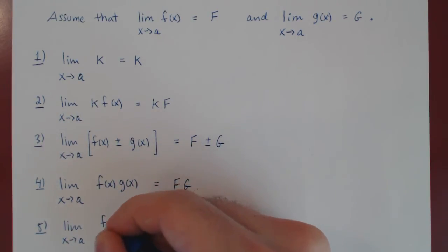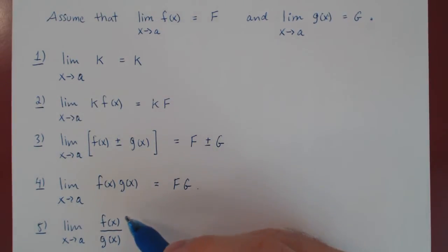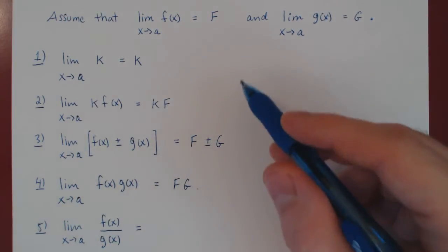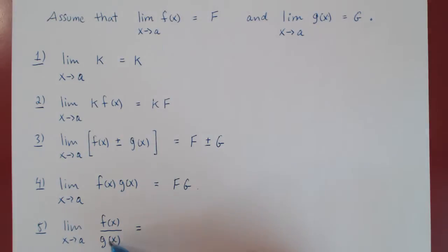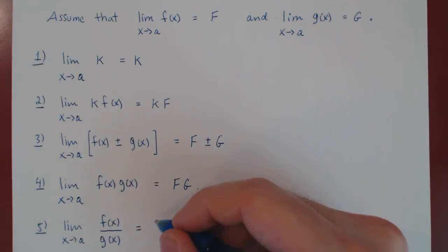So we're asking as x approaches a, what happens to the quotient of f of x and g of x? Well, again we use our intuition. As x approaches a, f of x is getting closer and closer to uppercase F. g of x is getting closer and closer to uppercase G. So naturally the quotient will be getting closer and closer to F over G.